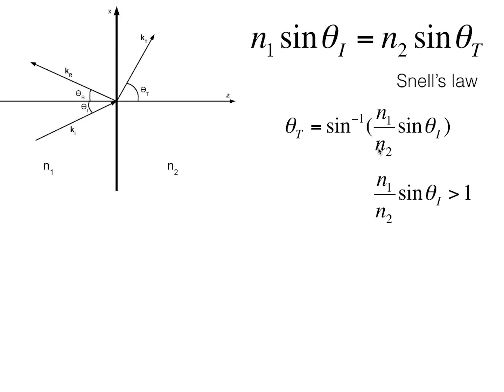So under this condition, this relation would not hold. On rearranging this, we get sine theta i is greater than n2 by n1. The point at which this relation breaks is when sine theta i is equal to n2 by n1 and that angle is known as the critical angle.